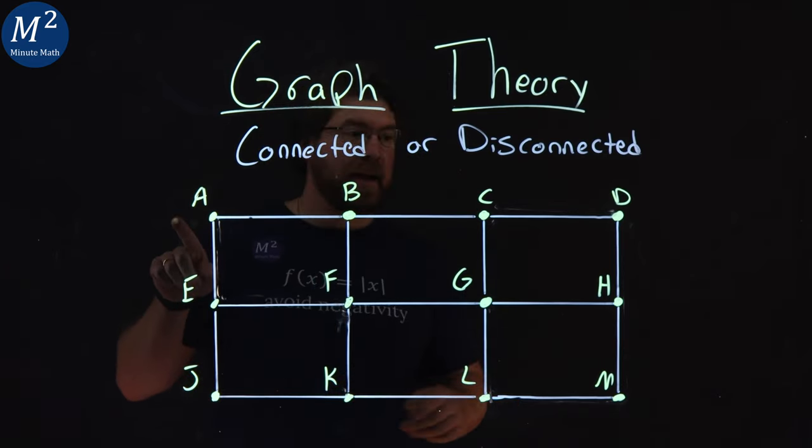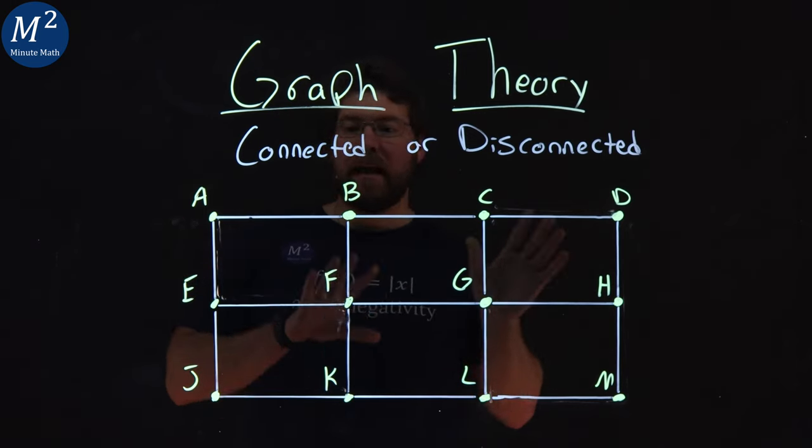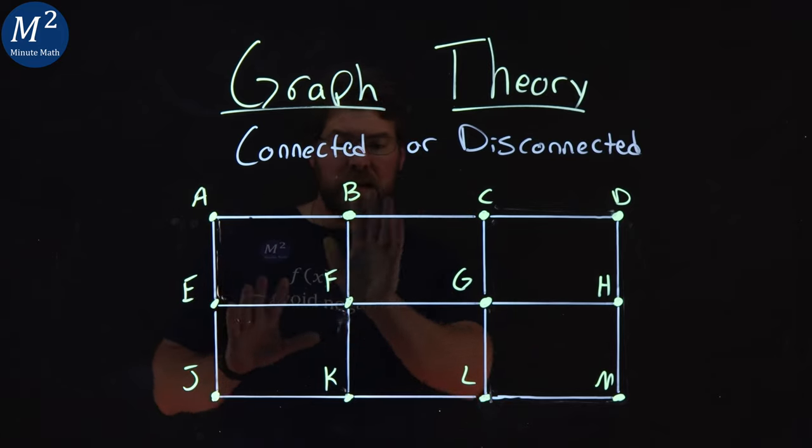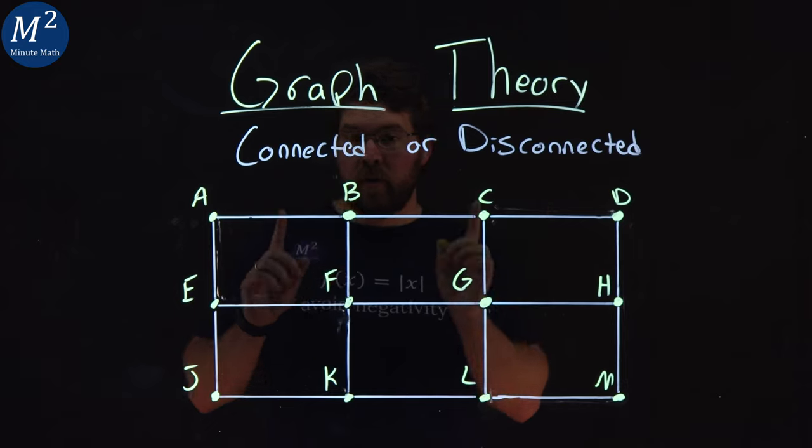If I start at A and I want to get to H, I can find a path to H. It's connected. So again, every vertex is connected in some way through edges and paths to get to every other vertex.